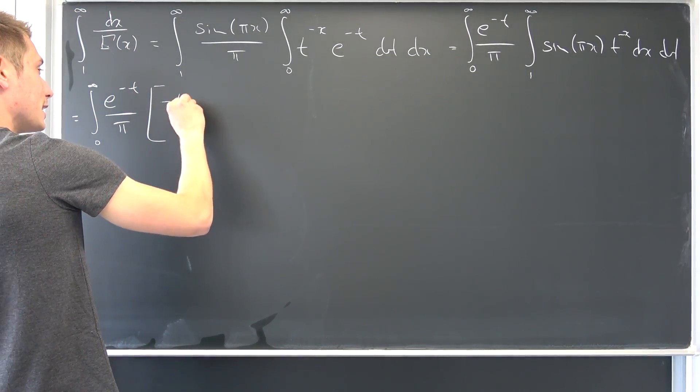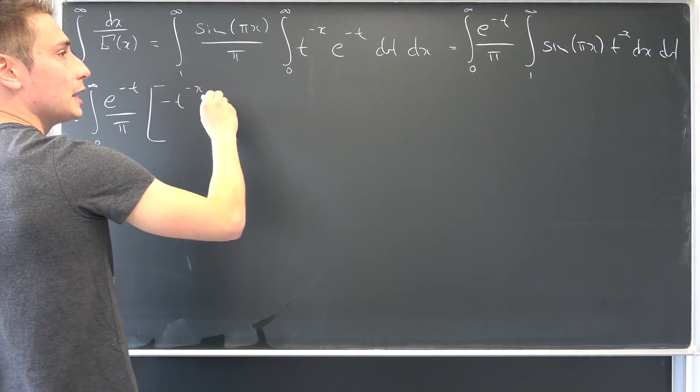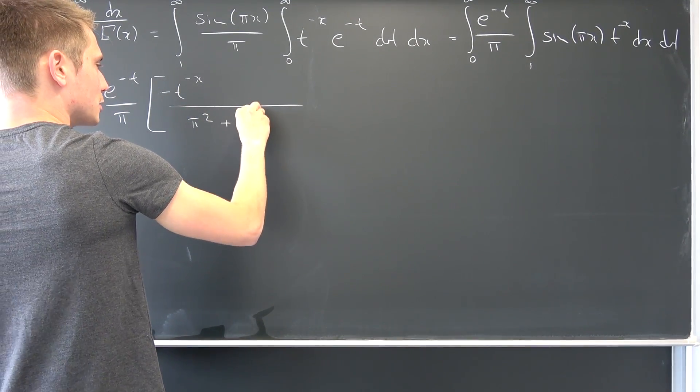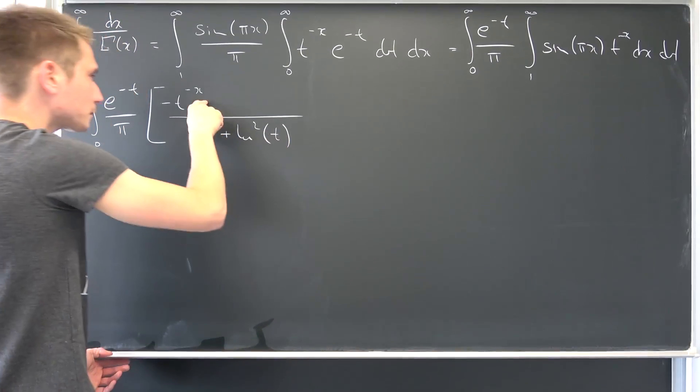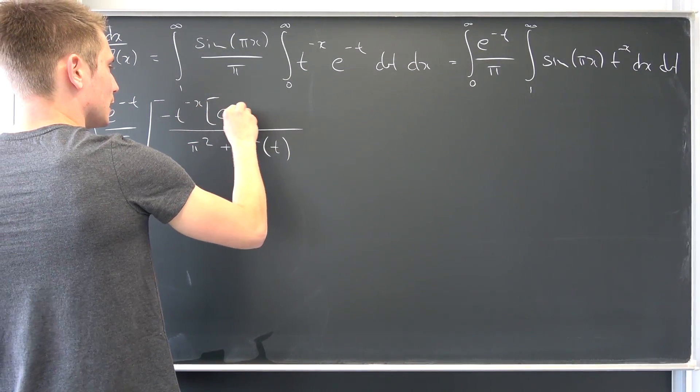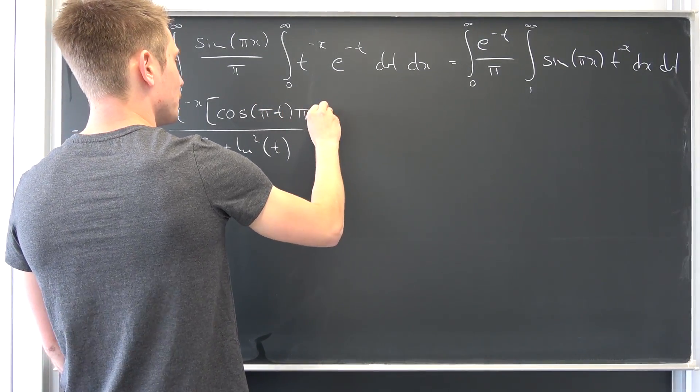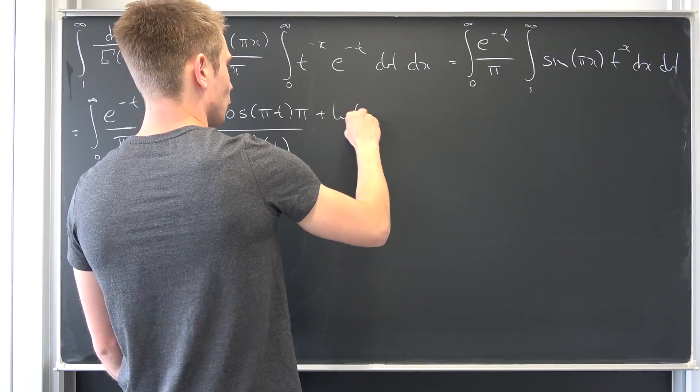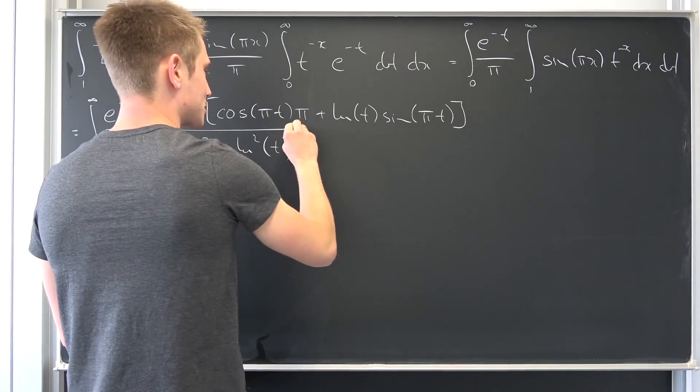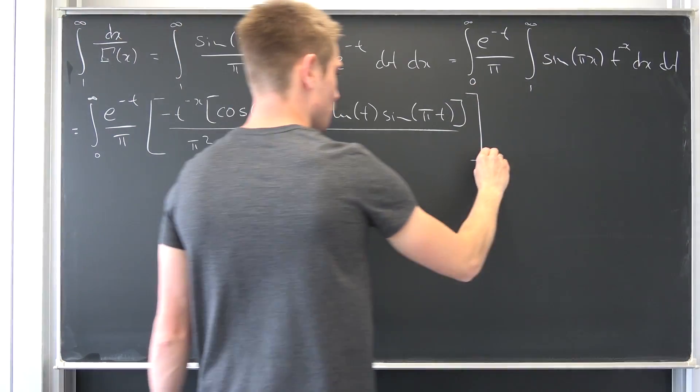Anti-derivative, I probably made a video on that. Anti-derivative of this thing is pretty elementary to be honest. Integral from 0 to infinity, e to the negative T over pi, and then we are going to have, let me think, it's a long one. So we are going to have negative T to the negative X power, and then we are going to have down here definitely pi squared plus natural log squared of T. Other than that, what we have in the numerator is the cosine of pi times T times pi plus the natural log of T times the sine of pi times T, brackets closed, and this whole thing from 1 to infinity.